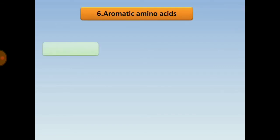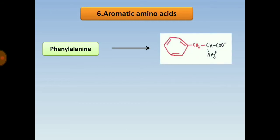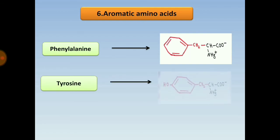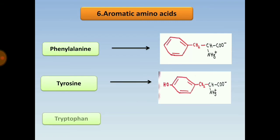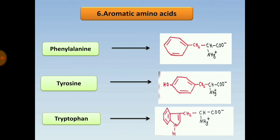Aromatic amino acids are phenylalanine, tyrosine, and tryptophan — each containing an aromatic ring in their structure. These are the three aromatic amino acids.